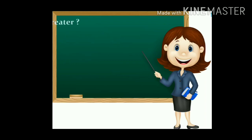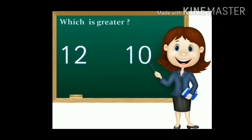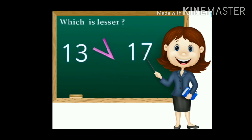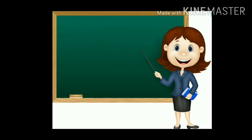Always crocodile eats bigger and smaller. So bigger and smaller — 12 and 10, which is bigger? Yes, 12 is the bigger number and 10 is the smaller number. Greater means big, smaller means less. Which is the lesser number — 13 or 17? The lesser number is 13 and the greater is 17. Greater means big number, less means small number.